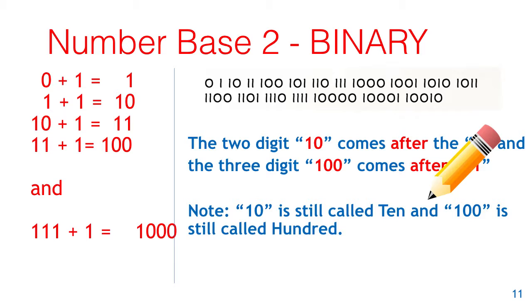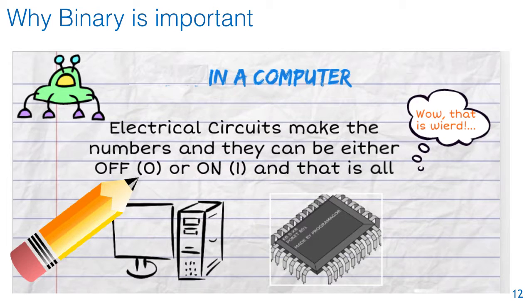We'll come back to that later. Now why is a binary number base important and useful? Well, it's used in your computers. Electrical circuits make the numbers in computers, and the math is done with these electrical circuits. And they can be either off, which is a zero, or on, which is a one. And that is all.